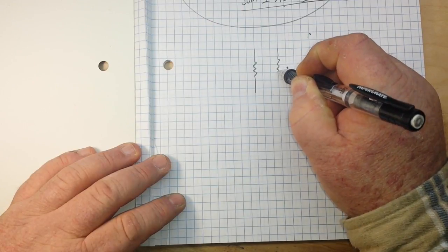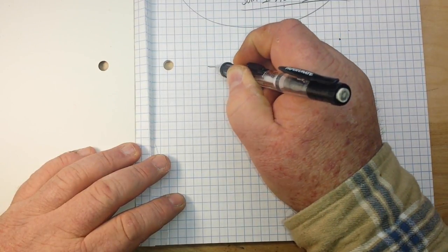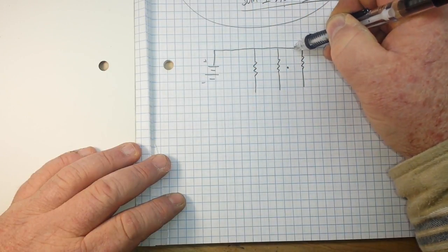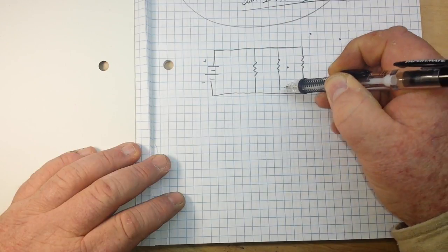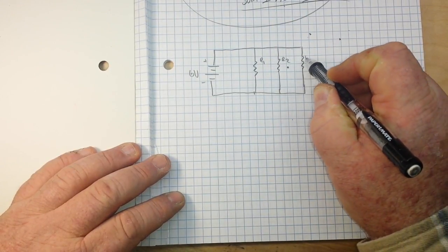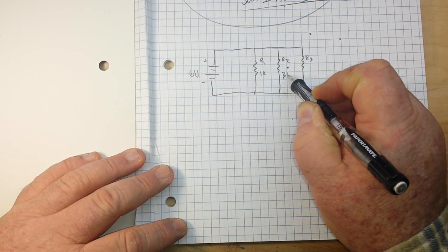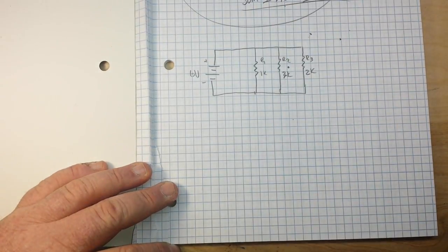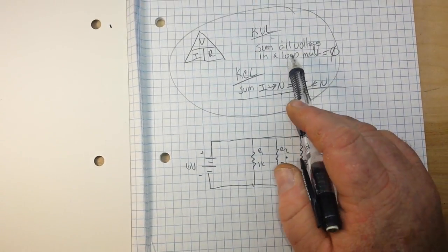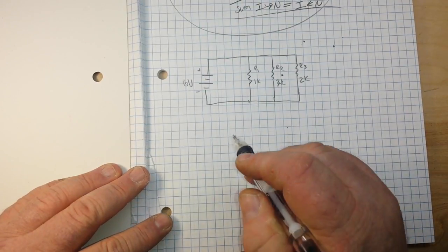Imagine if you will that I'm standing at the blackboard and drawing this lovely drawing for you. So this is our circuit. We have a six volt power source, we have three resistors R1, R2, and R3, and their values are 1k, 3k, and 2k. Now we know that all the voltages across all the components in a parallel circuit are the same. That's Kirchhoff's voltage law.